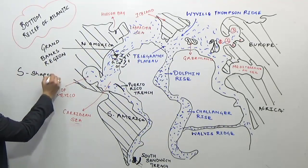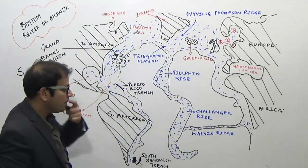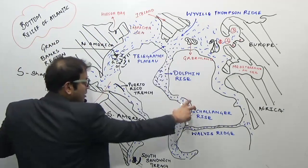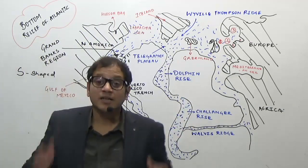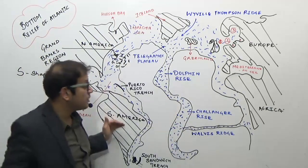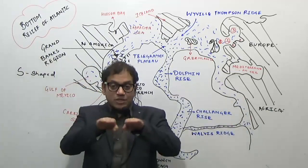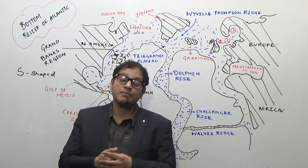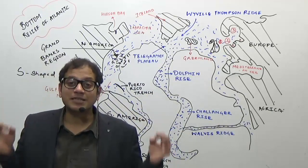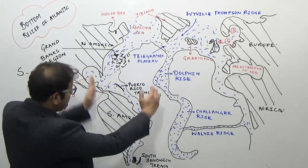Why is it S-shaped? Because North America is moving away from Eurasia, and South America is moving away from Africa — this part is faster than that part, so as a result this part has lagged behind in moving. Due to the movement of the American plates away from the African and Eurasian plates, there is separation and upwelling of lava and magma, resulting in the formation of a mid-oceanic ridge.